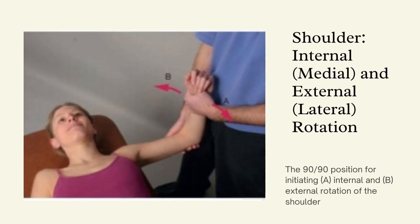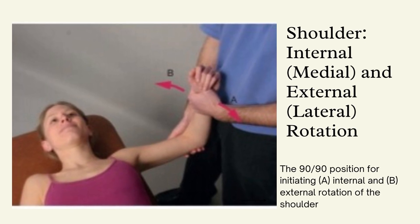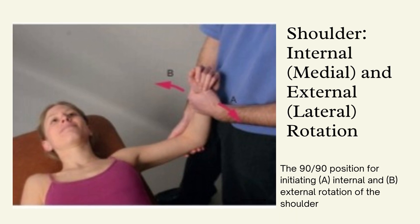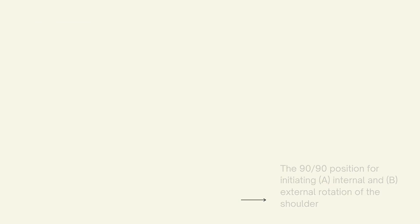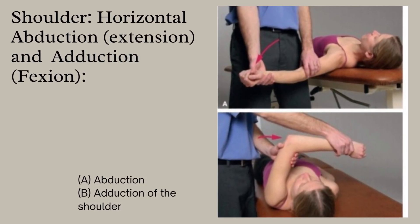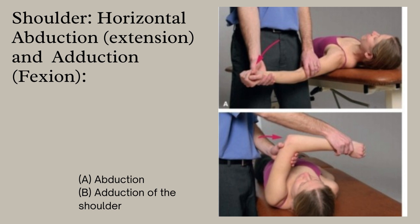After that, shoulder internal rotation and external rotation come. Shoulder medial and lateral rotations are very important. Medial rotation is performed by internally rotating the shoulder, while lateral rotation is performed by externally rotating the shoulder, as shown in the picture. The next range of motion technique for the shoulder is horizontal abduction and adduction. Horizontal abduction is performed similarly to extension, and adduction is performed similarly to flexion. Part A shows horizontal abduction while Part B shows adduction of the shoulder joint.